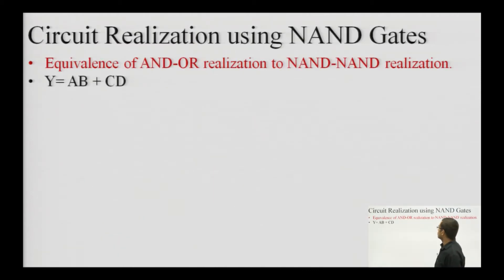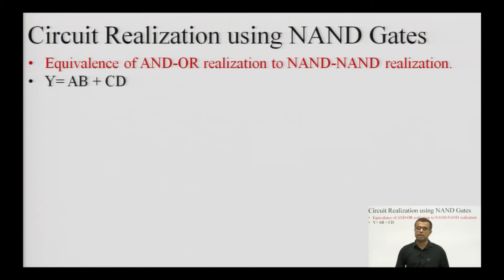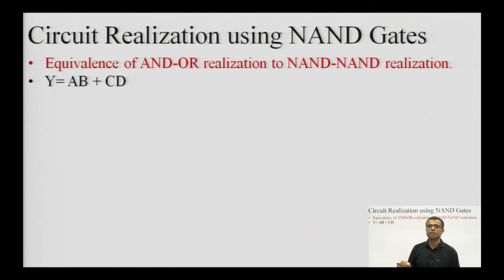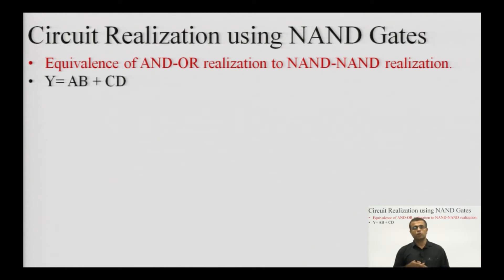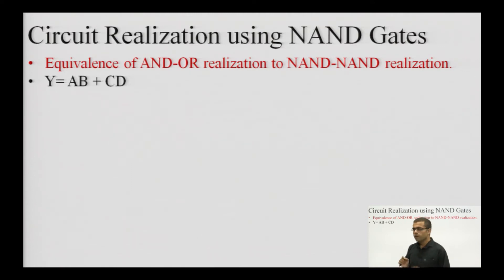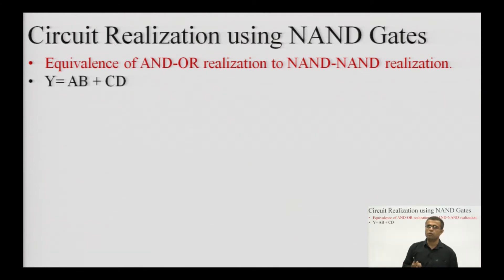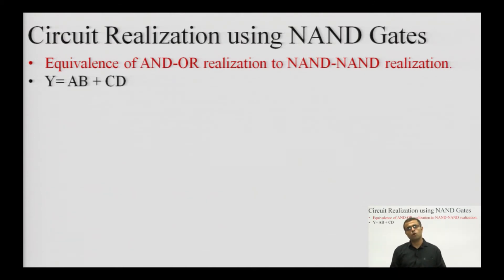Now coming to NAND-based realization of any expression. To proceed with NAND-based realization, we need to establish some equivalences so that NAND-based realizations can be easily obtained. We have to prove that the AND-OR realization is equivalent to a NAND-NAND structure — meaning AND gates and OR gates can both be replaced with NAND gates.